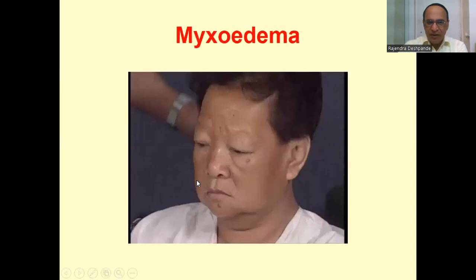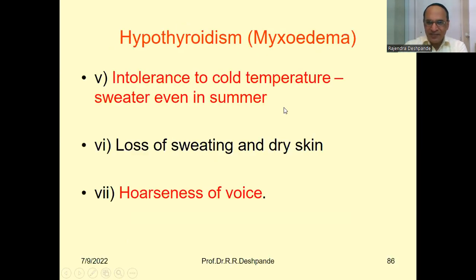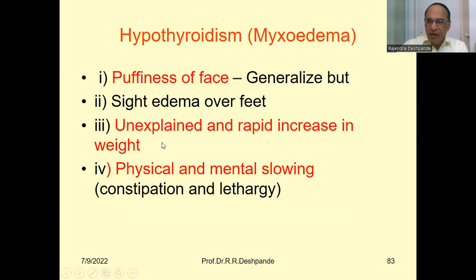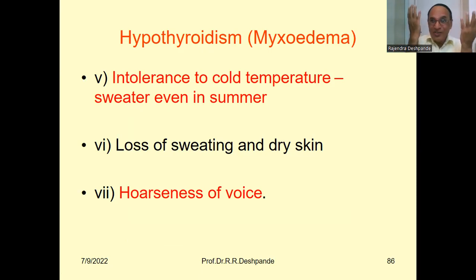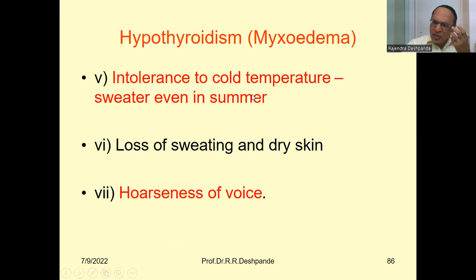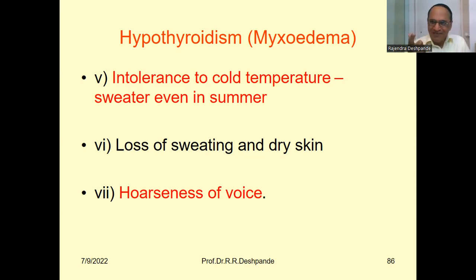The puffiness of the face — a slight swelling — is called the myxedematous face. Another typical feature is intolerance to cold temperature. The patient feels cold all the time, even in summer when everyone else is sweating in the heat. A myxedematous patient may wear a sweater even in summer. Loss of sweating and dry skin will also be present, as will coarseness of voice.